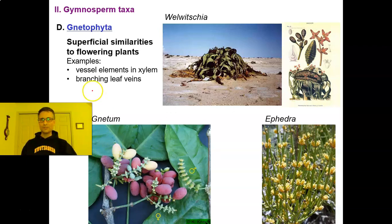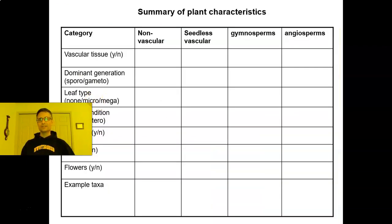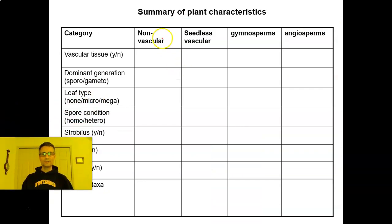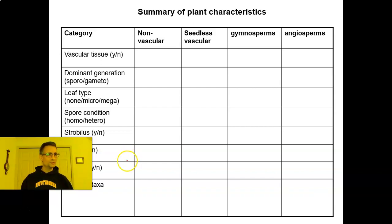You can continue filling out the comparative chart for non-vascular plants, seedless vascular plants, and now gymnosperms — thinking about which taxa have which characteristics. This is the end of our gymnosperm lecture. In the next lecture, we'll cover up our seeds and give them flowers — talking about the angiosperms.